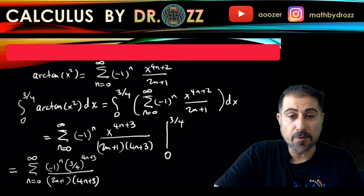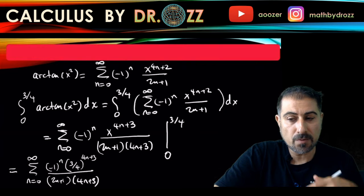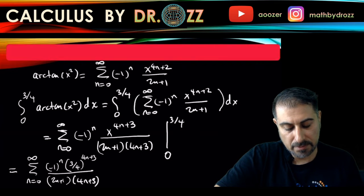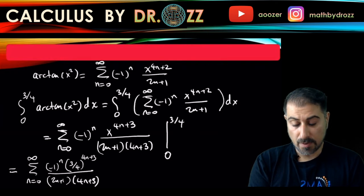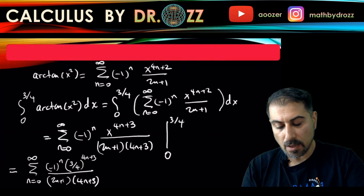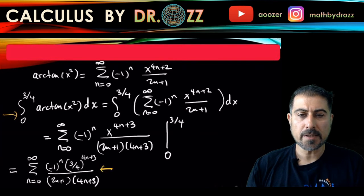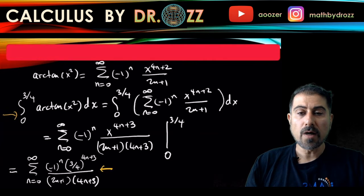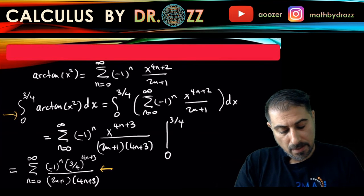Plugging in x = 0: since all terms start with at least x³ (when n = 0), every term evaluates to 0 at the lower limit. So I only need to evaluate the series at x = 3/4. This gives us the infinite series that represents the value of the integral, and since we have an alternating series, we can apply the alternating series remainder theorem.